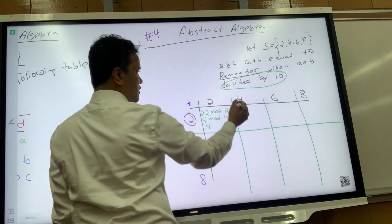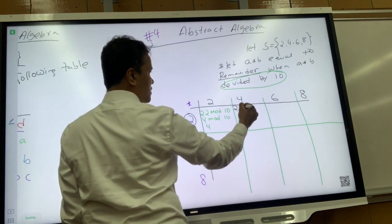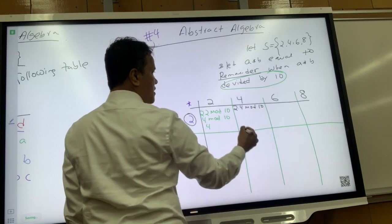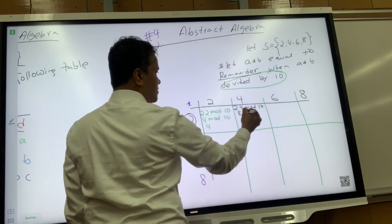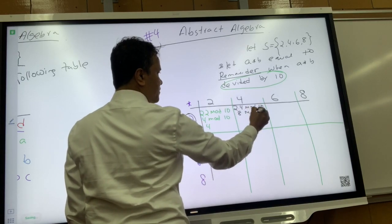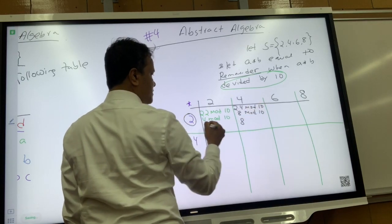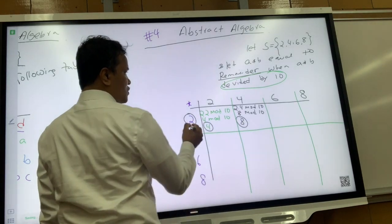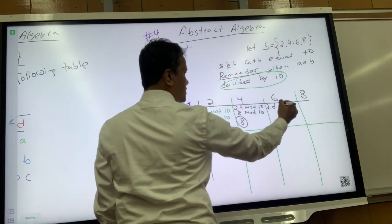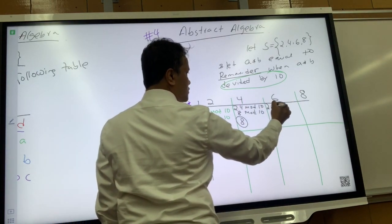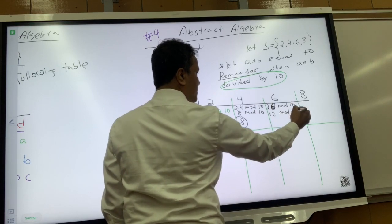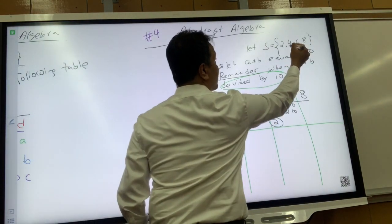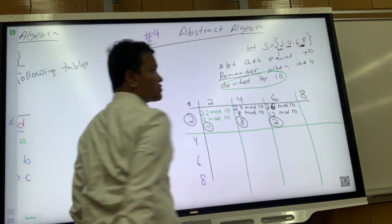Now let's do 2 times 4 mod 10, which is 8 mod 10, which is 8. Does 8 belong to the set? Yes, 8 belongs to set S. Now let's do 2 times 6 mod 10: 12 mod 10, which is 2. 2 belongs to set S — very nice.